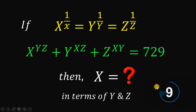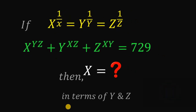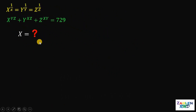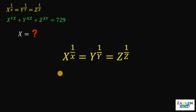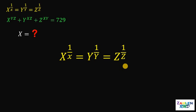You can pause this video if you want to give this problem a try. Now let's answer this question together. The first thing to do is to get our first given equation, which is x raised to 1 over x equals y raised to 1 over y equals z raised to 1 over z. There are a lot of ways to answer this kind of question, but this method works every time. We are going to equate these three expressions into another variable and call it k.